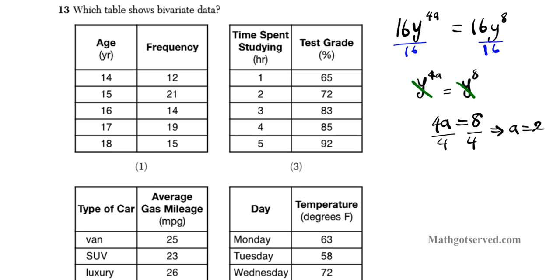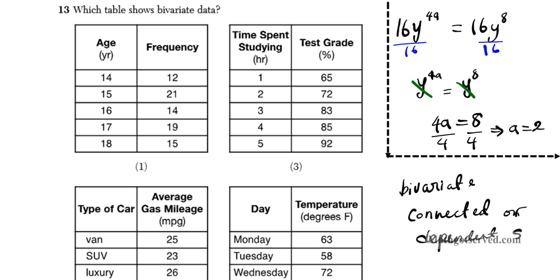This is just a test of your knowledge of vocabulary here. Bivariate data is basically two data collection of data sets that are related. One of the data sets must be dependent on the other. So bivariate, if you think about bivariate, think about connected or dependent. One must be dependent on the other or they have to be connected somehow. And the connection has to be logical or explicit.